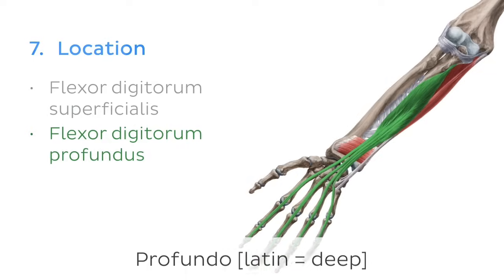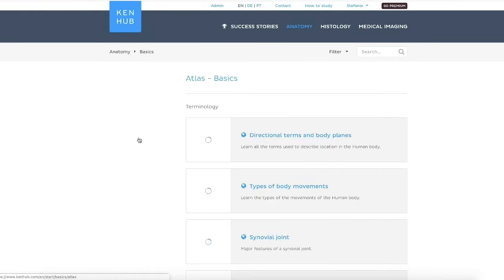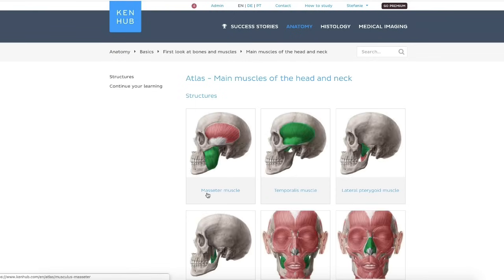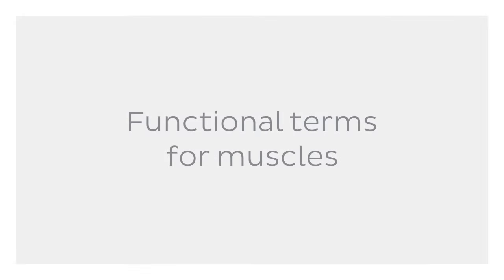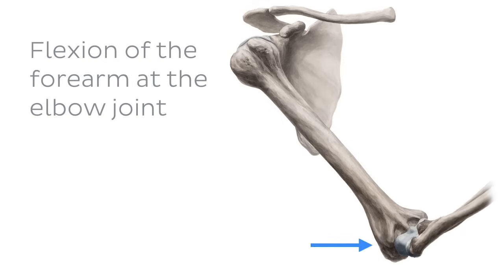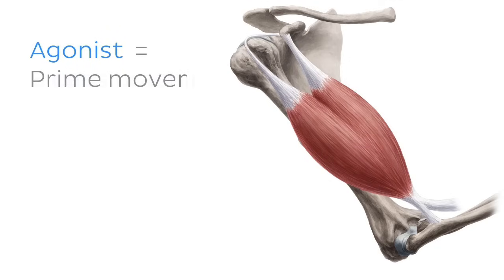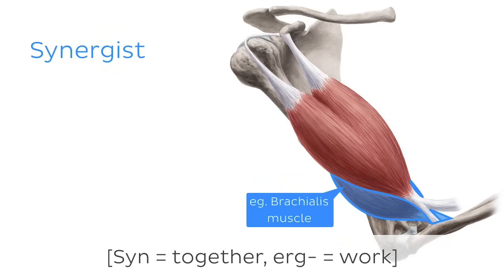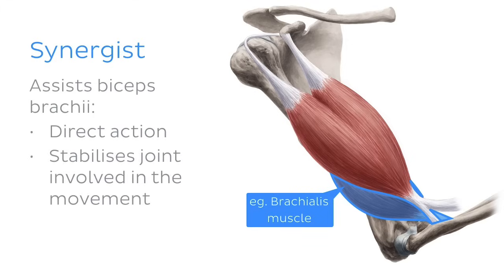Now, time to move on to some terms which may be used to describe the function of a muscle relative to a specific movement. For example, let's take flexion of the forearm at the elbow joint. It's said to have an agonist or prime mover muscle which does most of the work — in this case, the biceps brachii, which flexes the elbow joint. An agonist can be aided by synergist muscles — syn meaning together, erg meaning work — which help either by direct action or by stabilizing the joint involved in the movement.